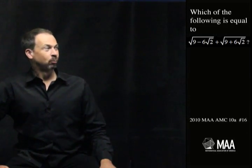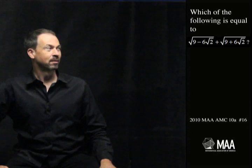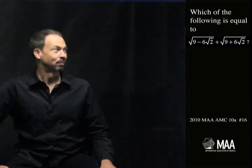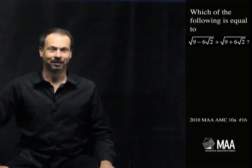Which of the following is equal to the square root of 9 minus 6 times the square root of 2 plus the square root of 9 plus 6 square root of 2.